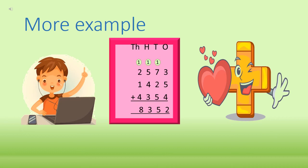Next, we add the hundreds column. The digits are 5, 4, and 3, plus 1 carry over. 5 plus 4 is 9, plus 3 is 12, plus 1 is 13. We write 3 in the hundreds column and carry 1 to the thousands column. The digits in the thousands column are 2, 1, and 4, plus 1 carry over. 2 plus 1 is 3, plus 4 is 7, plus 1 is 8. So our answer is 8,352.